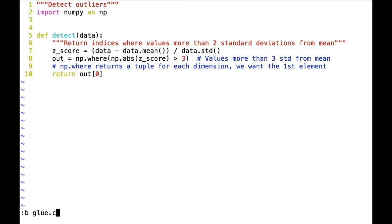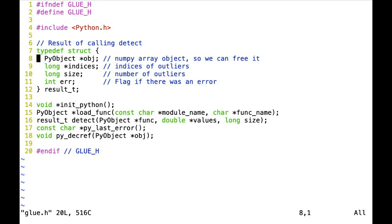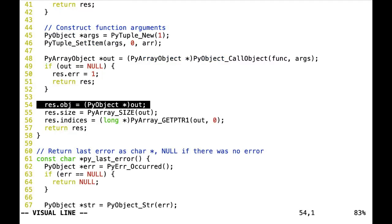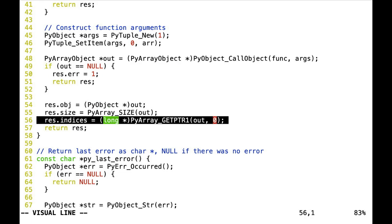So in glue.c we have a result object. This result object is the NumPy array, the indices, which is basically an array of longs, how many indices we found and an indicator, an integer whether there was an error or not. We set the object to the NumPy array and we convert it from a PyArray object to a Python object. This is okay because PyArray objects start with the Python object and then have some extra fields on it. We set the size by calling the NumPy C API function PyArray_Size. And then for the indices we get the underlying memory again using PyArray_GetPtr, getting the pointer to the memory and returning the results.